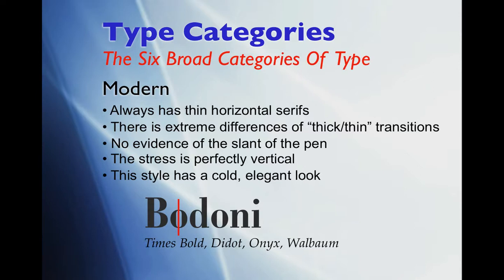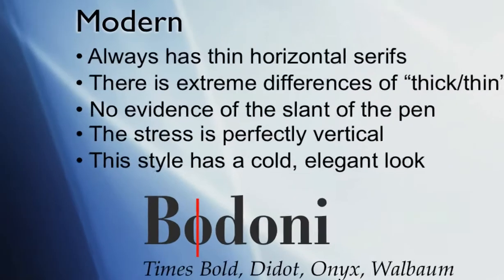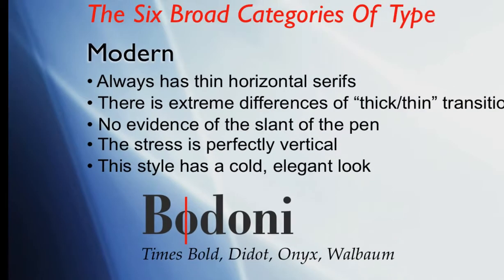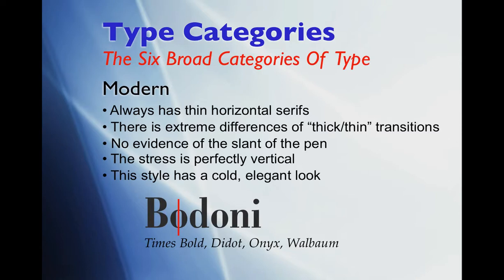There's no evidence of the slant of the pen. The stress — compare this to Old Style — the stress or the thin parts are straight up and down. Look at the little red line drawn there; the stress is perfectly vertical. This style often has a very cold, elegant look. If you look at things like the old CBS logo or fashion magazines like Vogue and Town and Country, you will see that modern fonts are often used because of this very elegant, cold, clean sort of look and feel.